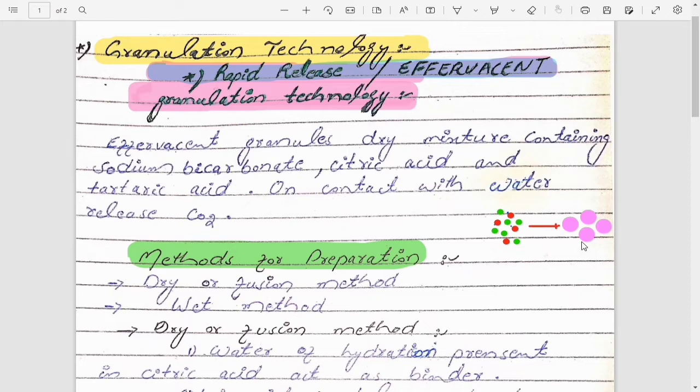Sometimes we need to increase the flow property of the powder, so we can convert the powders into granules. Second is to avoid dust production in the production area. Another is to avoid or remove the weight variation problem and content uniformity problem, and to reduce the de-mixing of the powder we can convert the powders into granules.